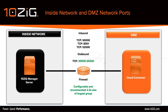Regarding ports used between the Tenzing Manager on the inside network and the Cloud Connector in the DMZ — inbound (DMZ to inside network), there are three TCP ports to open: TCP 50,000 for the Web Console component, TCP 8001 for firmware updates, and TCP 52,500, the most critical, required to proxy client registration, signaling, and packets between the Cloud Connector and the Manager server.